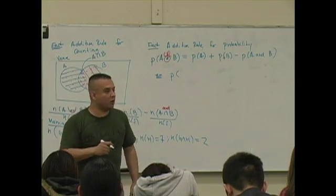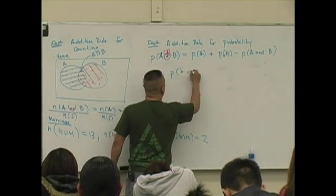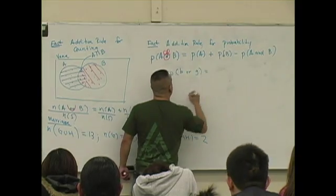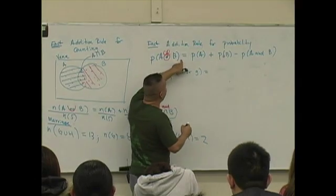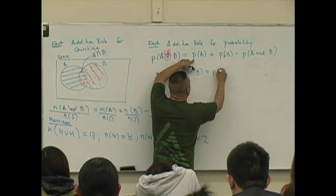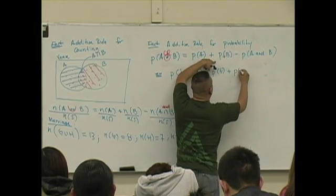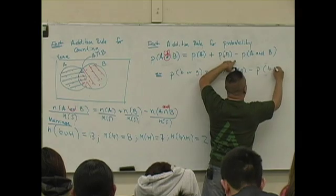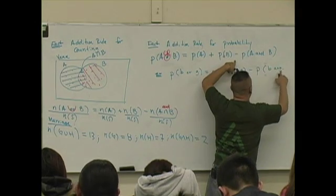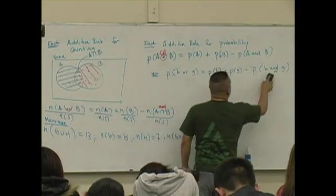If you use the addition rule, that means I have to determine the probability of selecting a blue plus the probability of selecting a green minus the probability of selecting both a blue and a green marble.